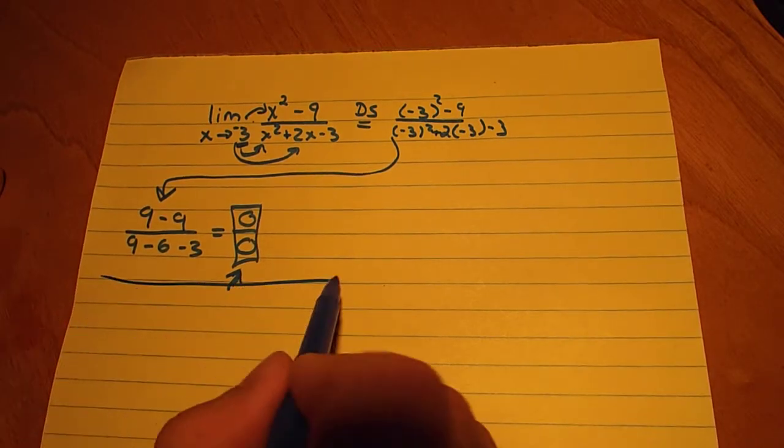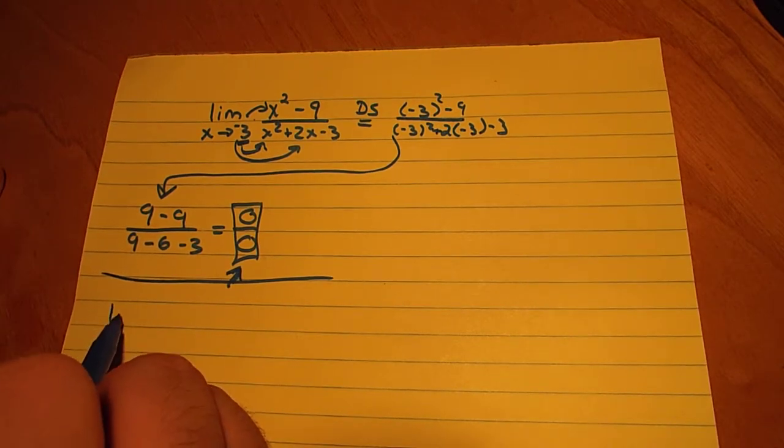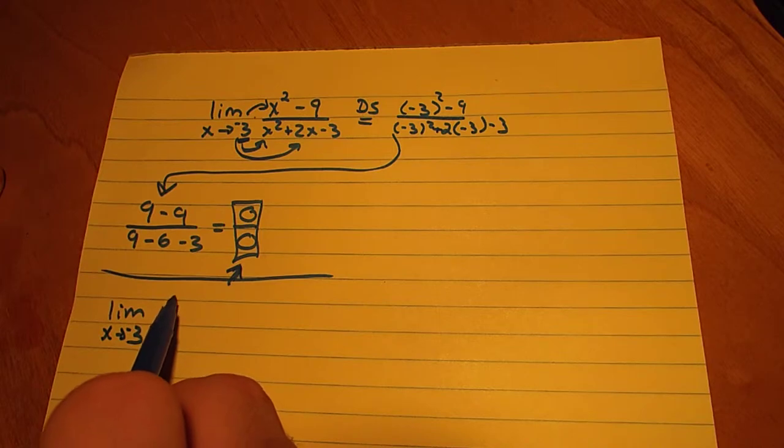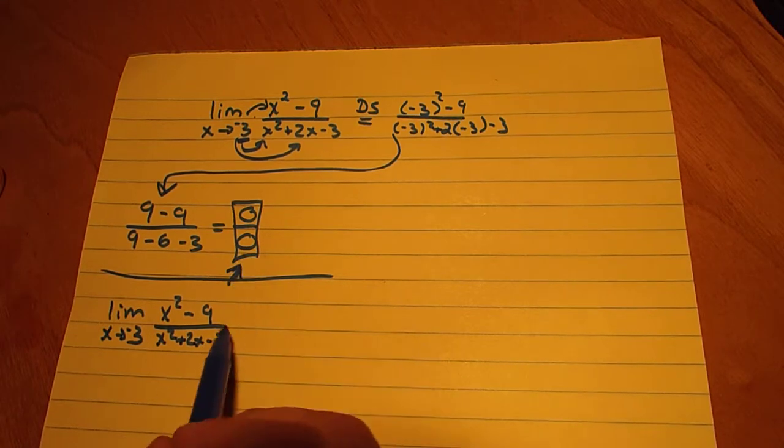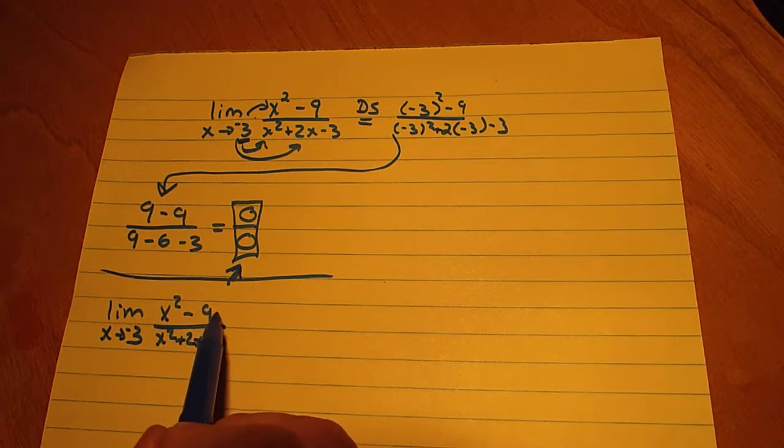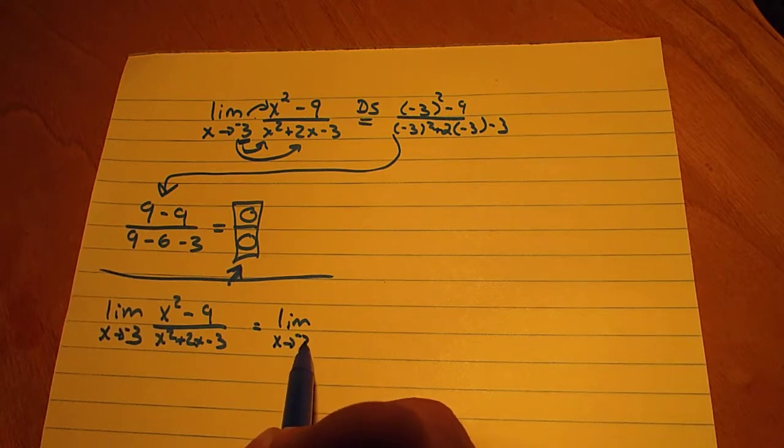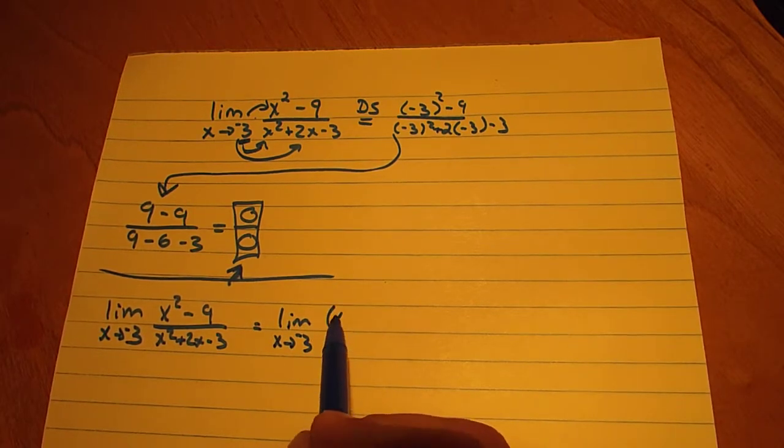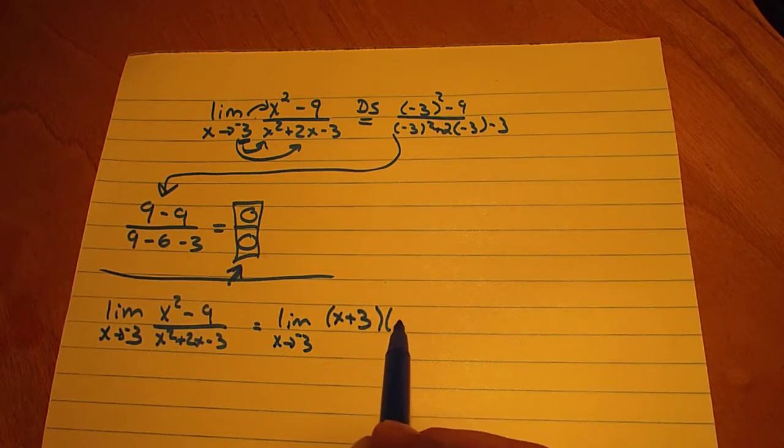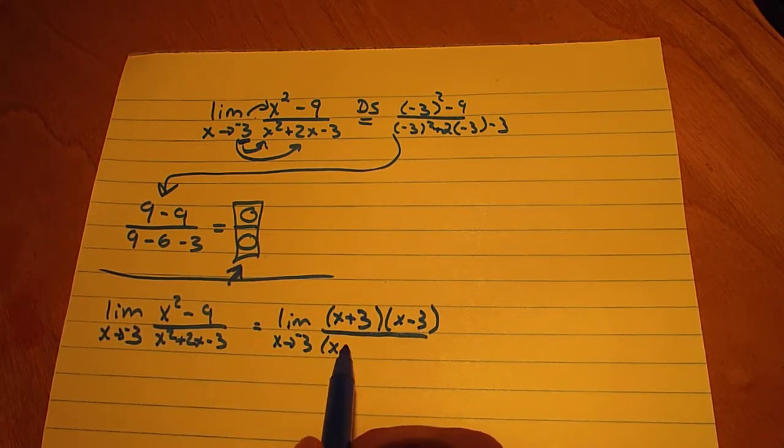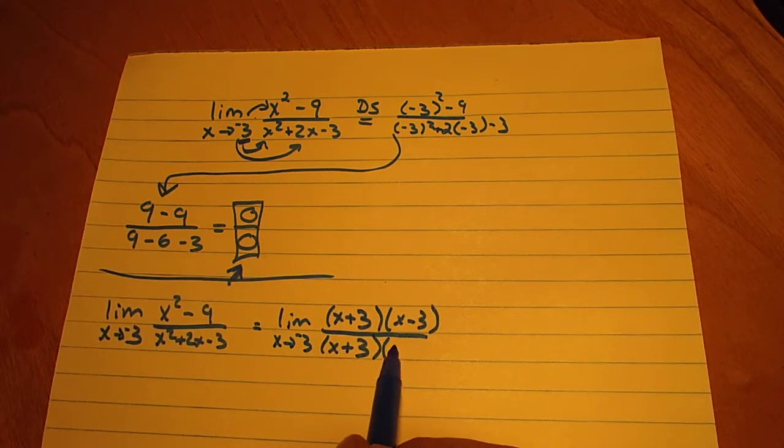So if we take now the limit as x approaches negative 3, we have our original expression. Now what we can try to do is see if these expressions are factorable. So we end up with the limit as x approaches negative 3 of x plus 3 times x minus 3. And the bottom is also factorable. We get x plus 3 times x minus 1.